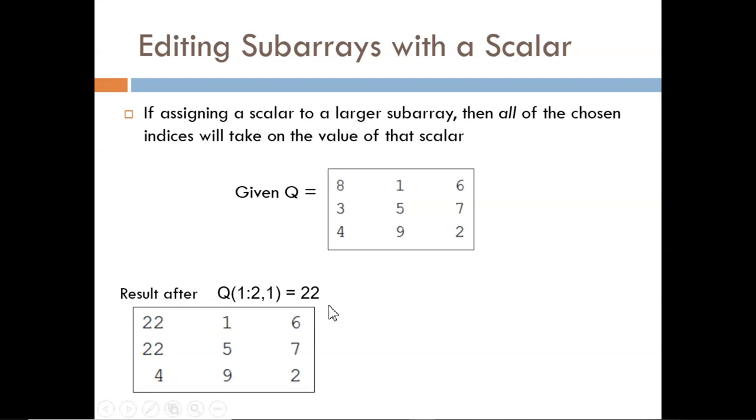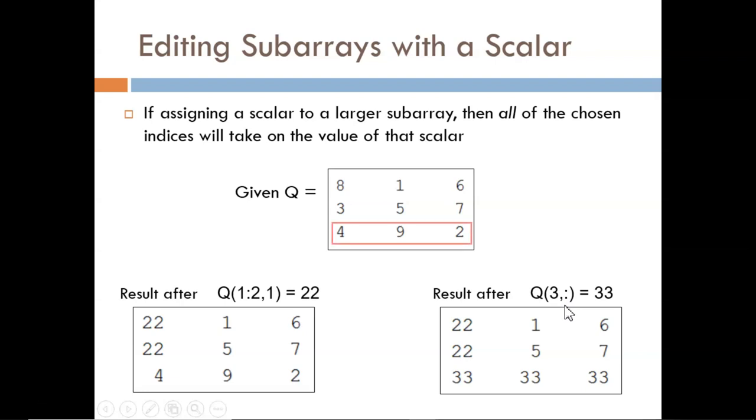In this next example, we are changing the entire third row. Remember, the colon should be interpreted as all columns. So now you can see that the bottom contains all 33s. The general idea is when we are assigning a scalar to a larger subarray, then all of the chosen indices will take on the value of that scalar.